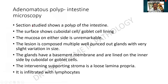The microscopic description should go as follows: Section studied shows a polyp of the intestine. The surface shows cuboidal cells or goblet cell lining. The mucosa on either side of the lesion is unremarkable. The lesion is composed of multiple well-punched-out glands with slight variation in size. The glands have a basement membrane and are lined on the inner aspect by either cuboidal cells or goblet cells. The intervening stroma is loose lamina propria, which can sometimes be infiltrated with lymphocytes. Please remember these points: basement membrane, cuboidal cells, goblet cells, surface epithelium.